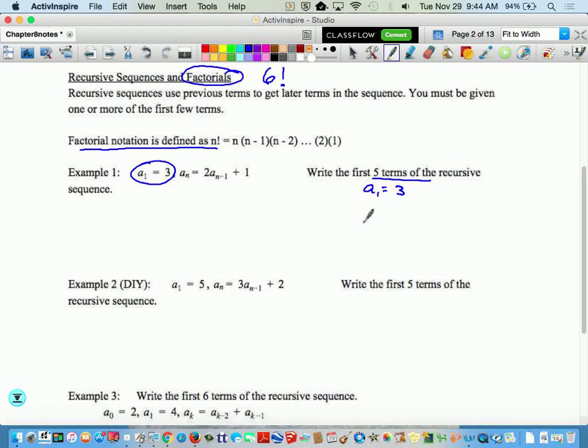That's 3. So now, if I want to find a sub 2, I'm supposed to take 2 times—remember our n value is 1, so what's 2 minus 1? It's a sub 1.